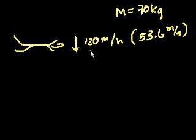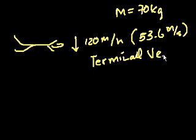But anyway, they are asking us, what force does air resistance exert on the skydiver? So let's be clear a couple of things. This 120 miles per hour is the skydiver's terminal velocity. And if you're not familiar with what terminal velocity is, I will now explain it to you.